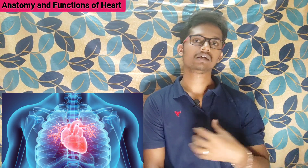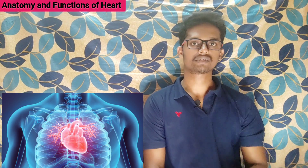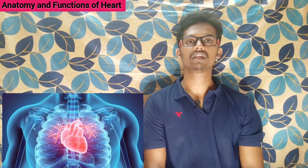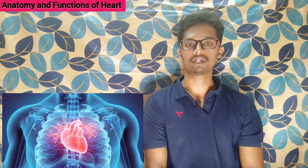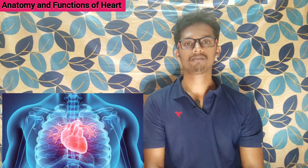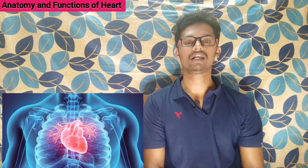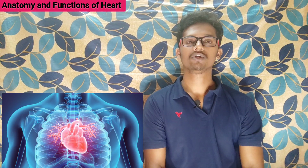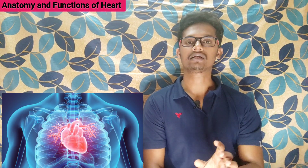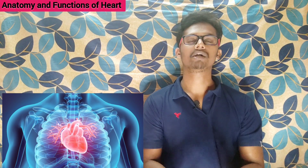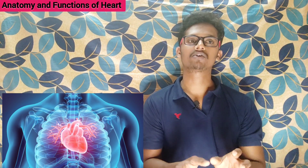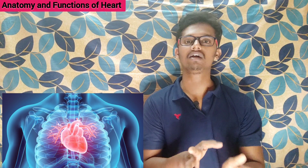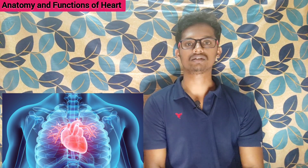We have ribs on the right side and left side, so the ribs protect our heart. If we look at the heart, it is a little bit to the left side. Usually we have a center, but most of the heart is present on the left side.